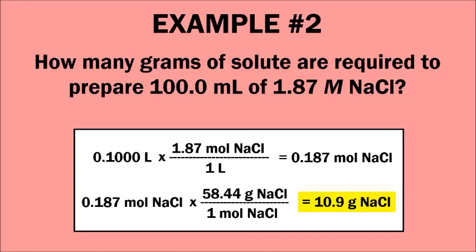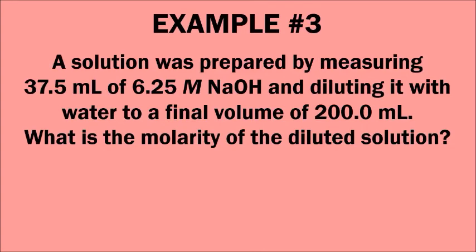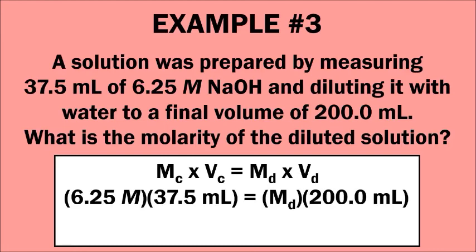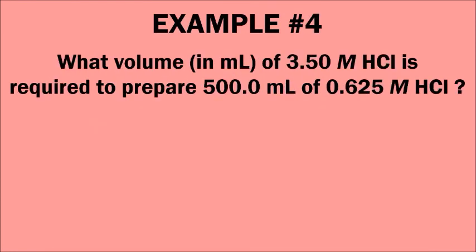Example 3 uses the dilution equation. A solution was prepared by starting with 37.5 milliliters of 6.25 molar sodium hydroxide, diluted with water to a final volume of 200.0 milliliters. Solving for M_d: using M_c × V_c = M_d × V_d, with volumes in milliliters, we get 6.25 × 37.5 = M_d × 200.0. The molarity of the diluted solution is 1.17 moles per liter.